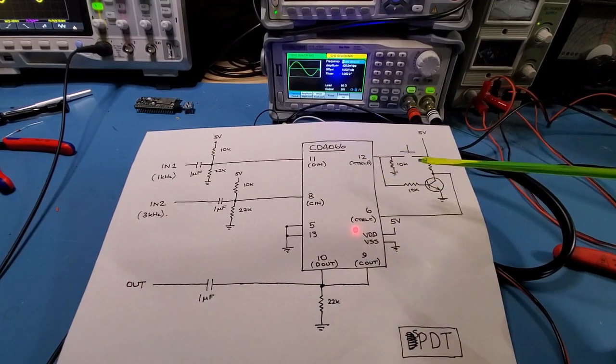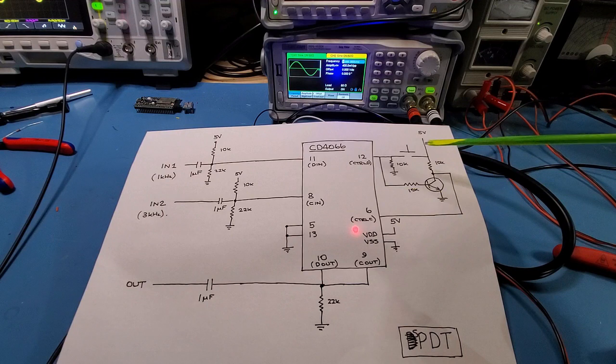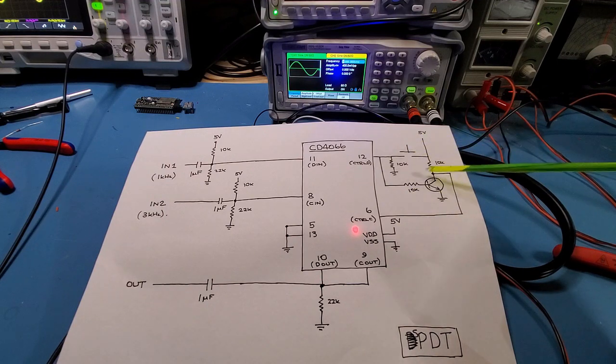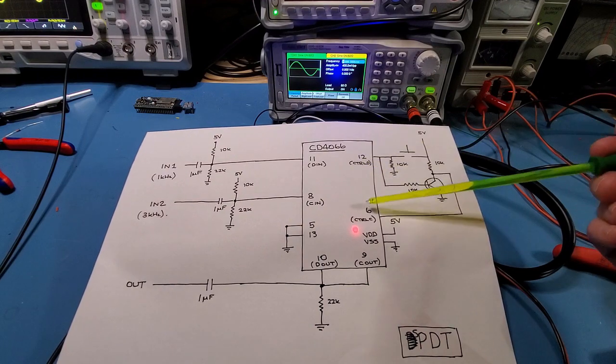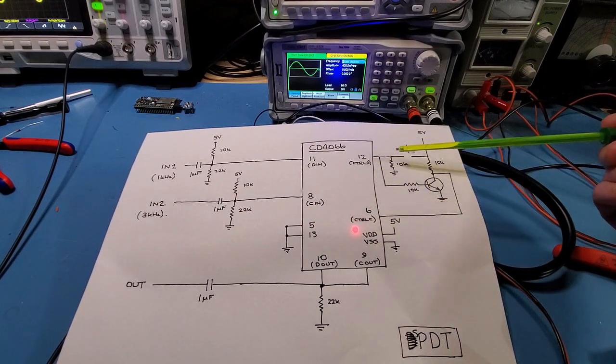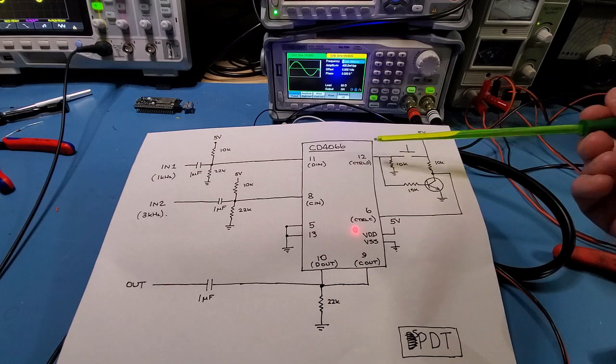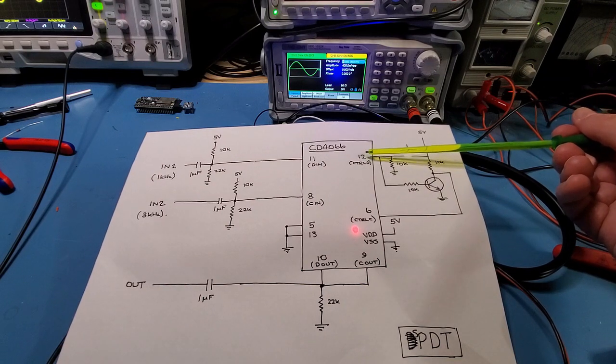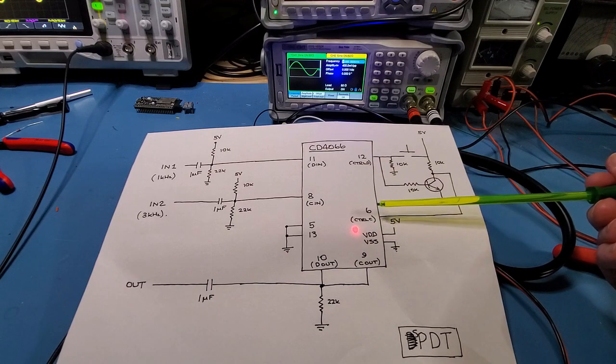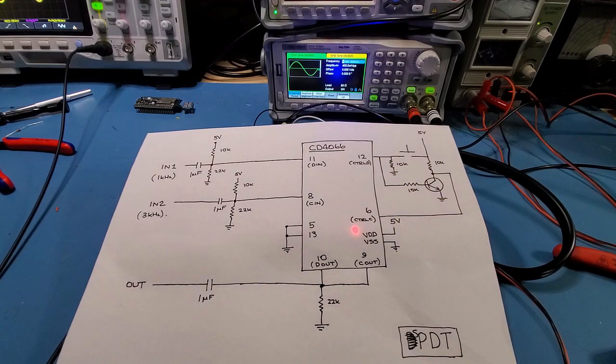Okay so that's the single pole double throw switch completed. Excuse the beep there. What I'll do now is instead of controlling this with the switch and a transistor I'm going to control pins 12 and 6 with an ESP32. And I'll basically just have two GPIOs. One that turns this guy off and on. One that turns this guy off and on. So that's coming right up.